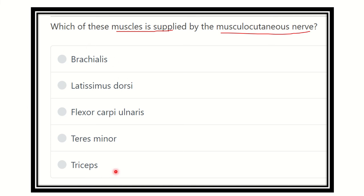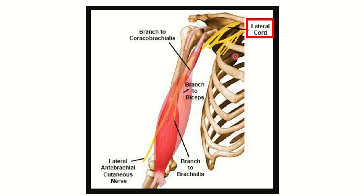We have to find the muscle supplied by the musculocutaneous nerve. In this picture we can see this nerve — the musculocutaneous nerve — and it arises from the lateral cord of the brachial plexus and supplies the arm muscles.